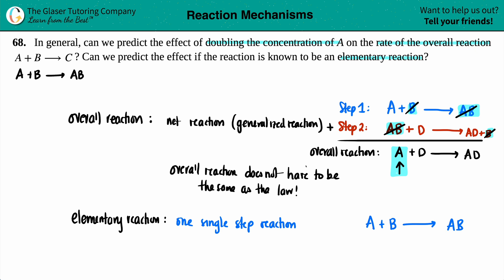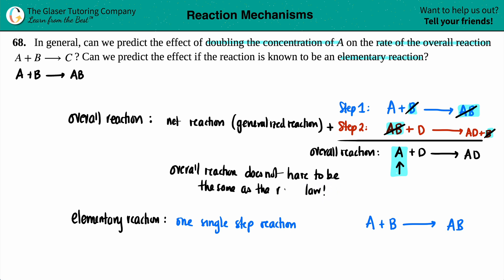As we're going to see in another question, some of these steps will be slow — meaning they're rate limiting — and some will be fast. Because of that, those steps are what dictate the rate law. So for an overall reaction, it does not have to be the same as the rate law because there are many steps inside. If you increase A, it doesn't necessarily mean you're affecting the rate — maybe A isn't even in the rate law. So can we predict for the overall reaction? No.